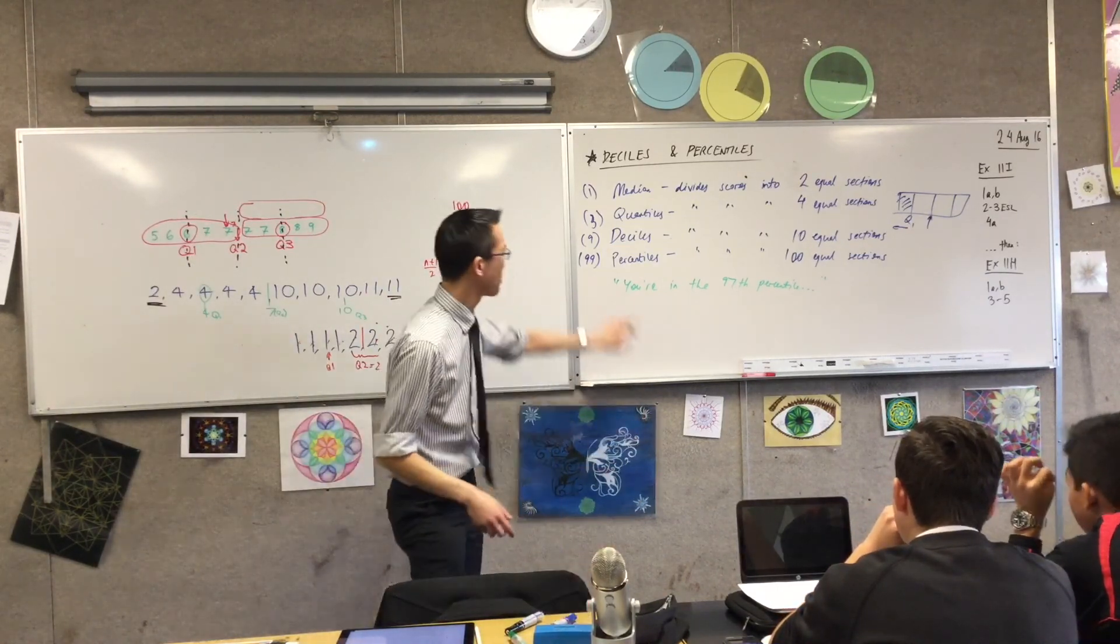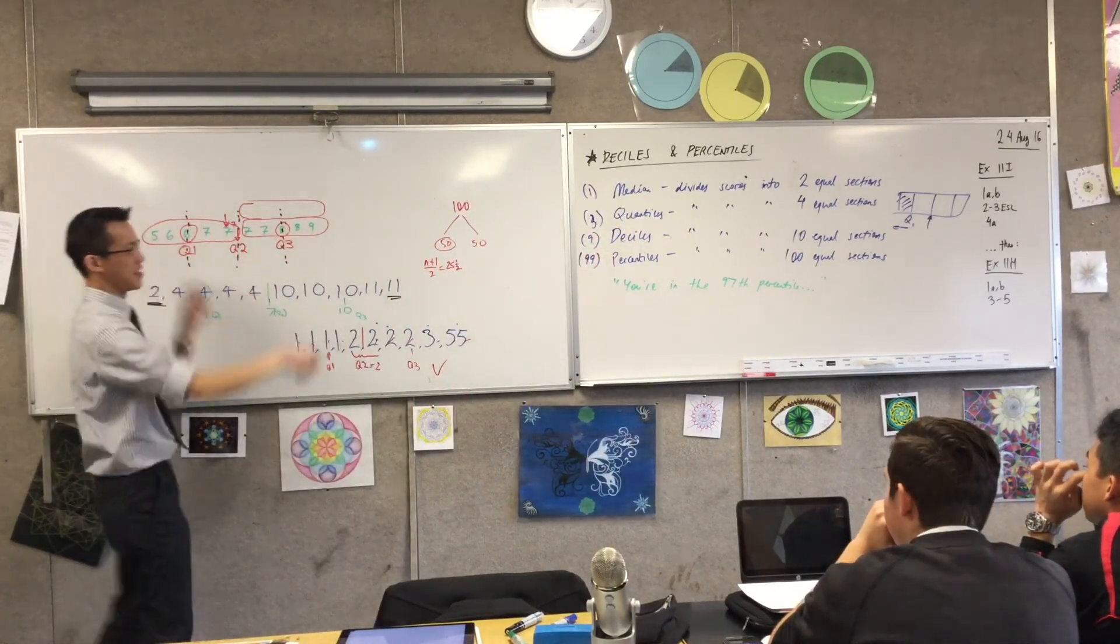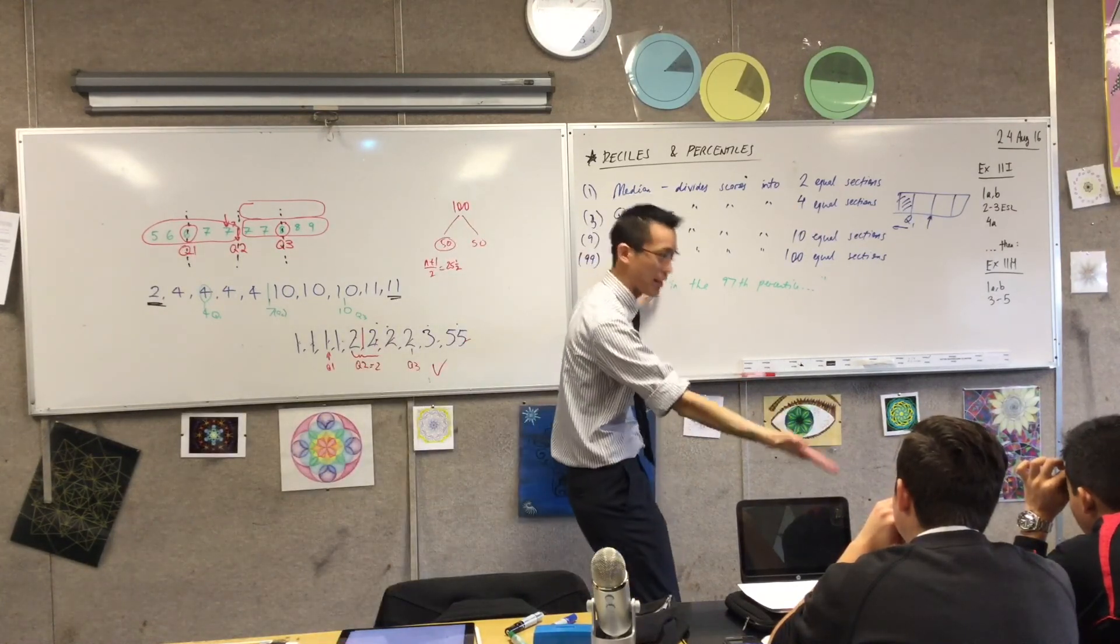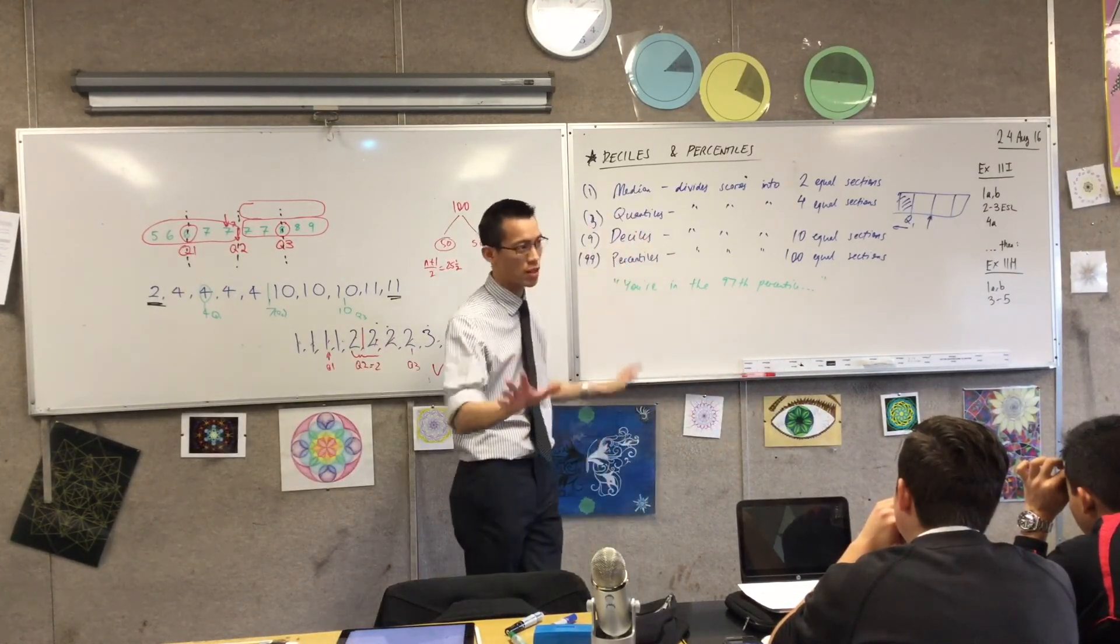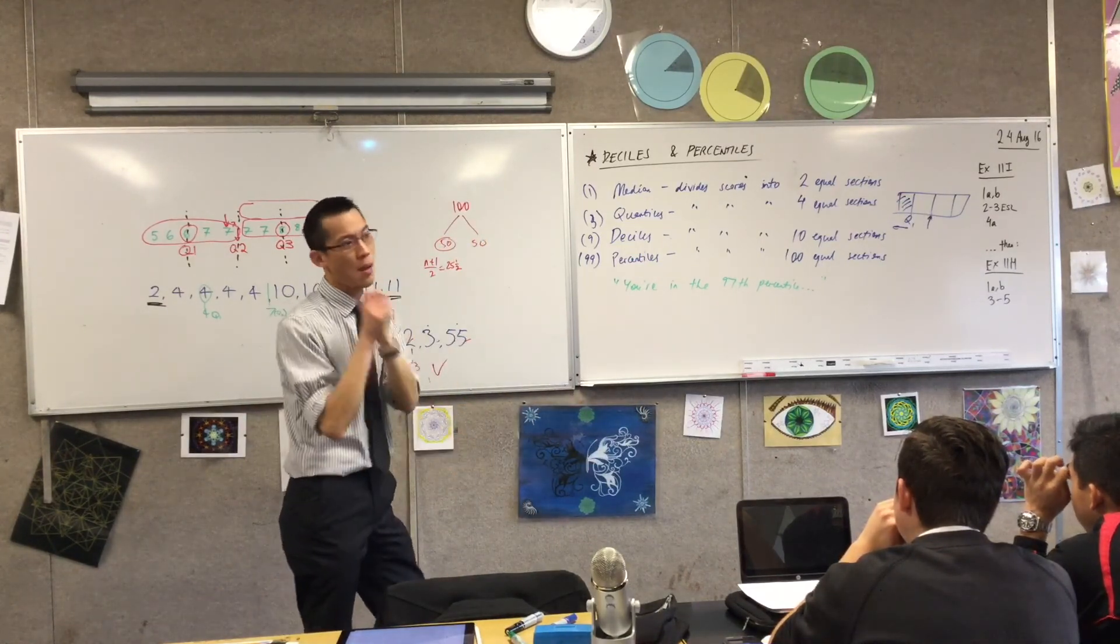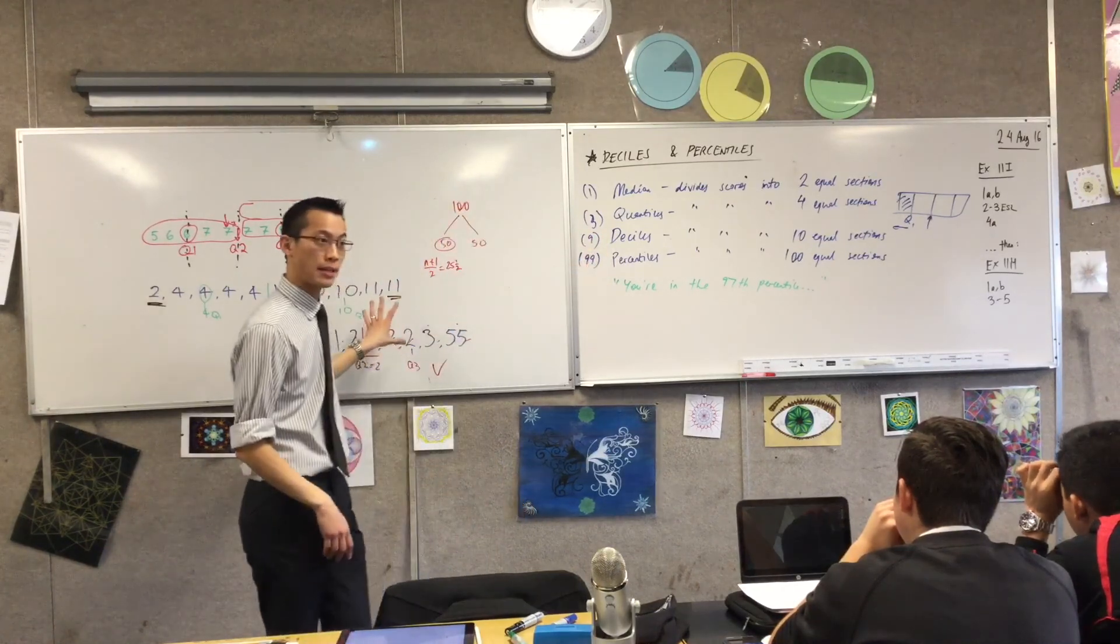So what you've got here is a very fine way of describing where are you in proportion to everyone else. Now it was quite a bit of work to work out what a quartile was. Deciles and percentiles, you will not be asked to calculate, find what these are, it's just too much work. We have programs, a spreadsheet will do this for us.